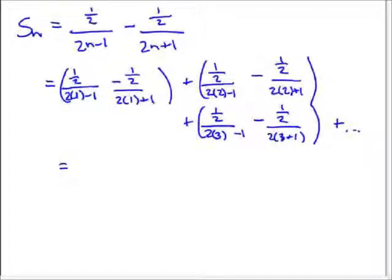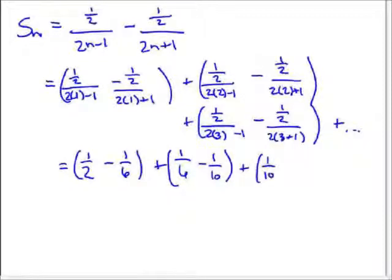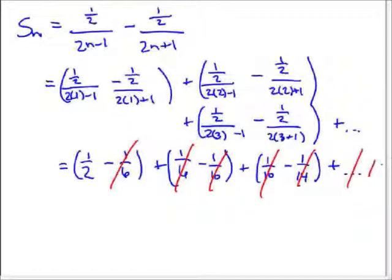So these terms now equal 1/2 - 1/6 + 1/6 - 1/10 + 1/10 - 1/14. And as we keep going, from here you see that these will start canceling out. We have -1/6 and +1/6, -1/10 and +1/10. And then as we keep going out, we'll see that these will cancel and so on and so forth. So really all we have left is that 1/2. So our sum equals just that 1/2.